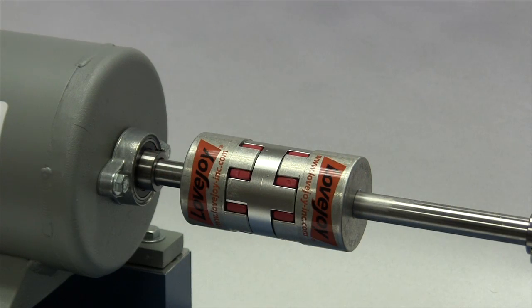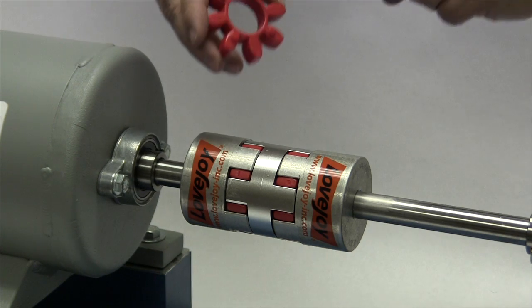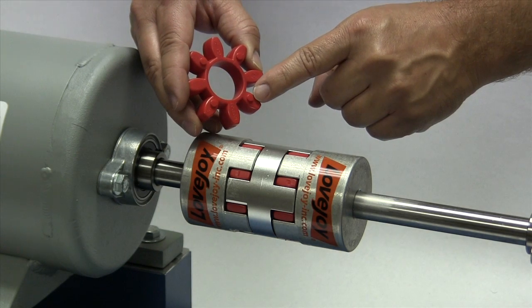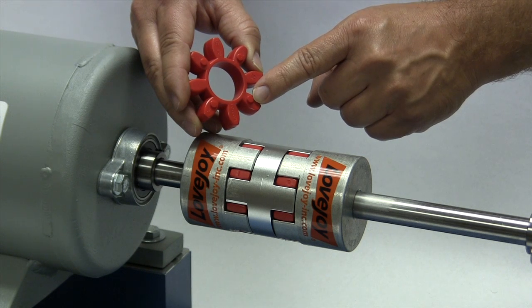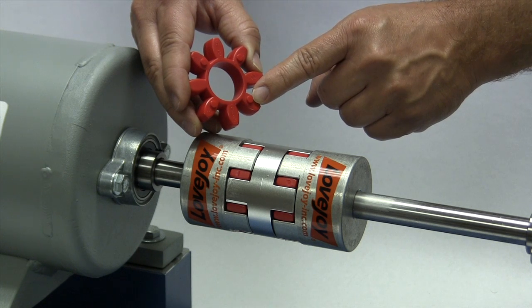Now we will carefully move the equipment into place, bringing the hubs together until they barely touch the raised dots on the sides of the spider. Care needs to be taken to ensure the jaws do not come into contact with the jaws of the opposing hub as we move the equipment.